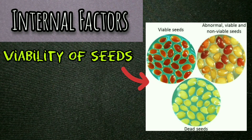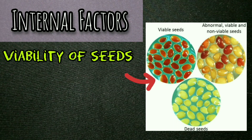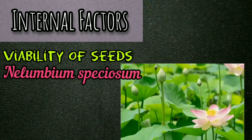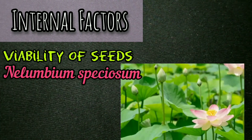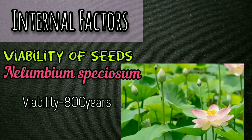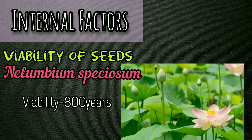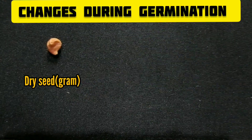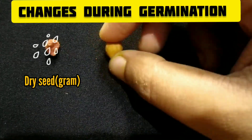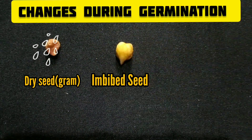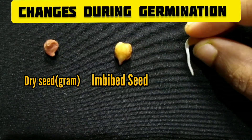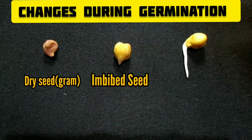Viability testing is necessary to ascertain the germination capacity of any seed. The longest authentic record of viability is that of Nelumbium speciosum, whose age has been calculated to be 800 years. When all the necessary conditions are satisfied, the first change noticed is swelling of the seed by rapid imbibition and osmosis of water.